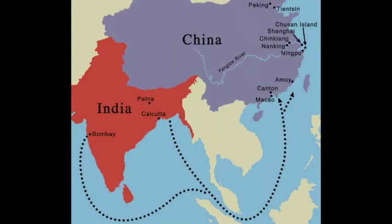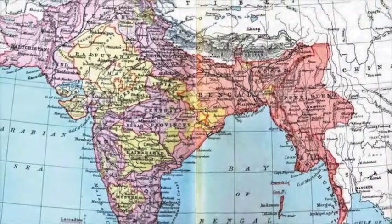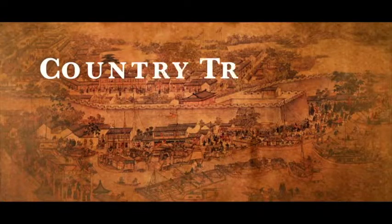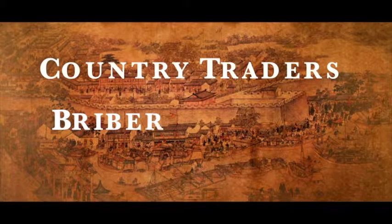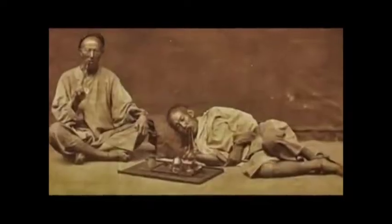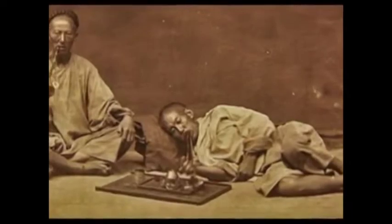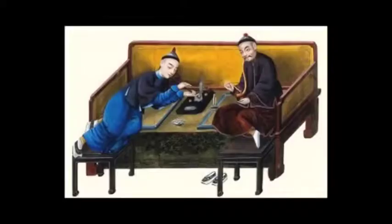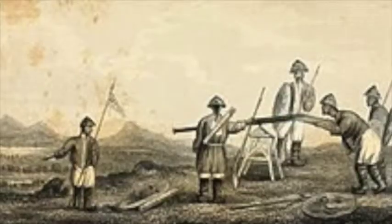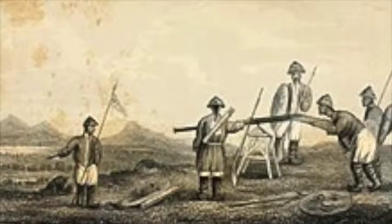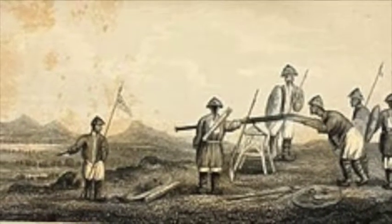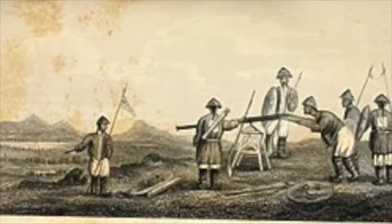Consequently, the British started to harvest poppies from India, which was their colony. Country traders and bribery played a huge role in bringing opium into China. When China's law forbade all use of opium except for medical purposes, country traders received bribes from smugglers and started to sell opium, which marked the start of the opium addiction. They received heavy bribes such as gold and silver, so the country traders could not easily resist.